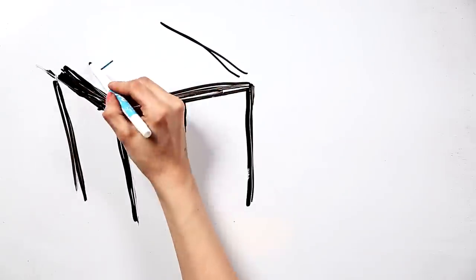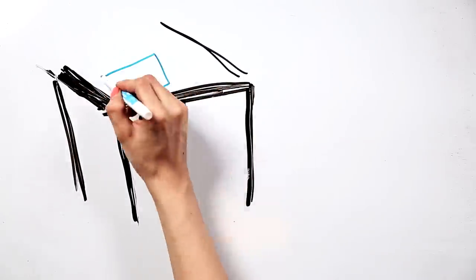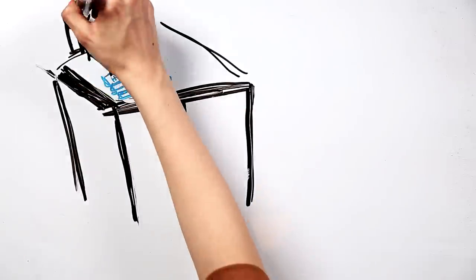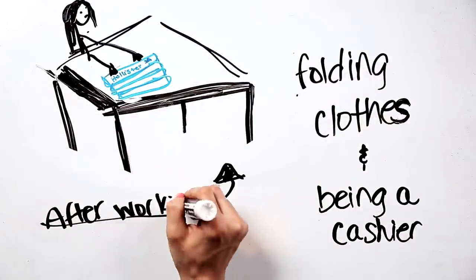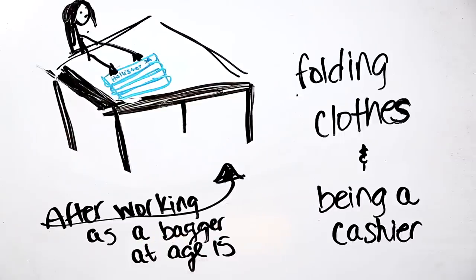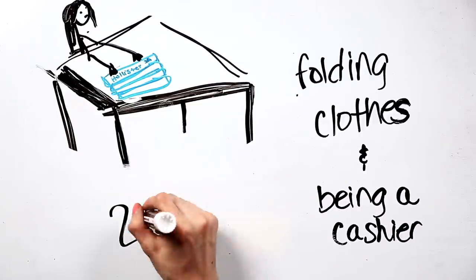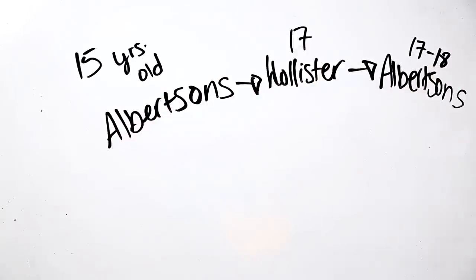I worked at Hollister now and then would go back to Albertsons. The reason I got jobs as a teenager was because I wanted to buy things for myself that my parents wouldn't buy. Such as expensive clothes. First I worked at Albertsons when I was 15. Then I went to Hollister and then I went back to Albertsons.